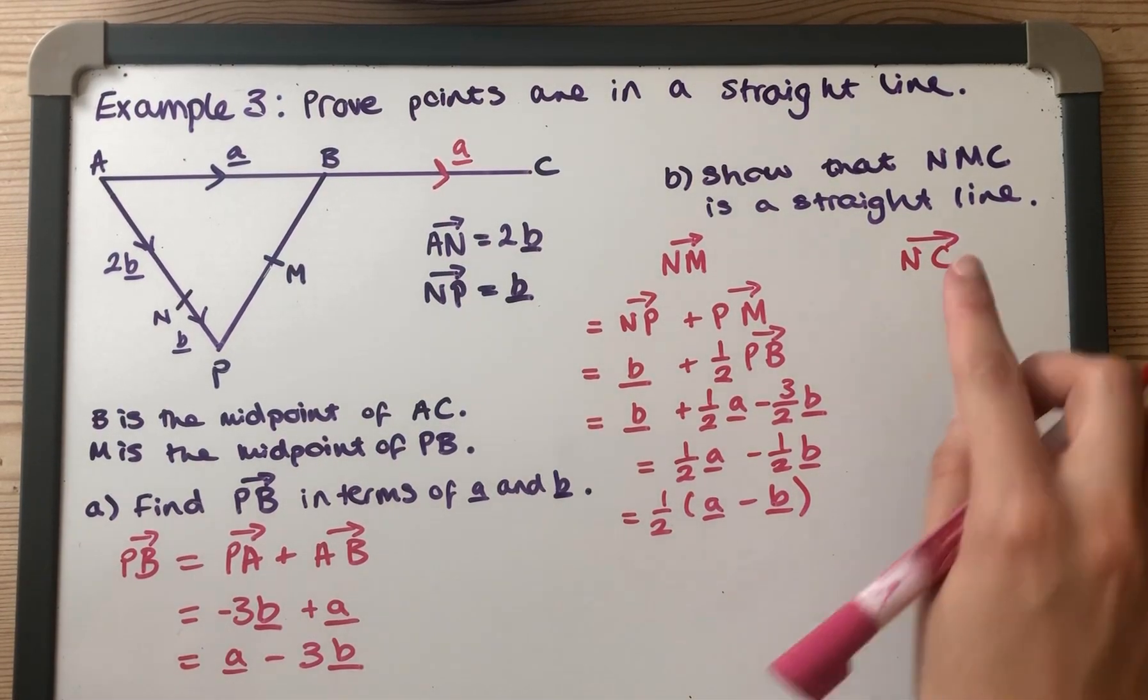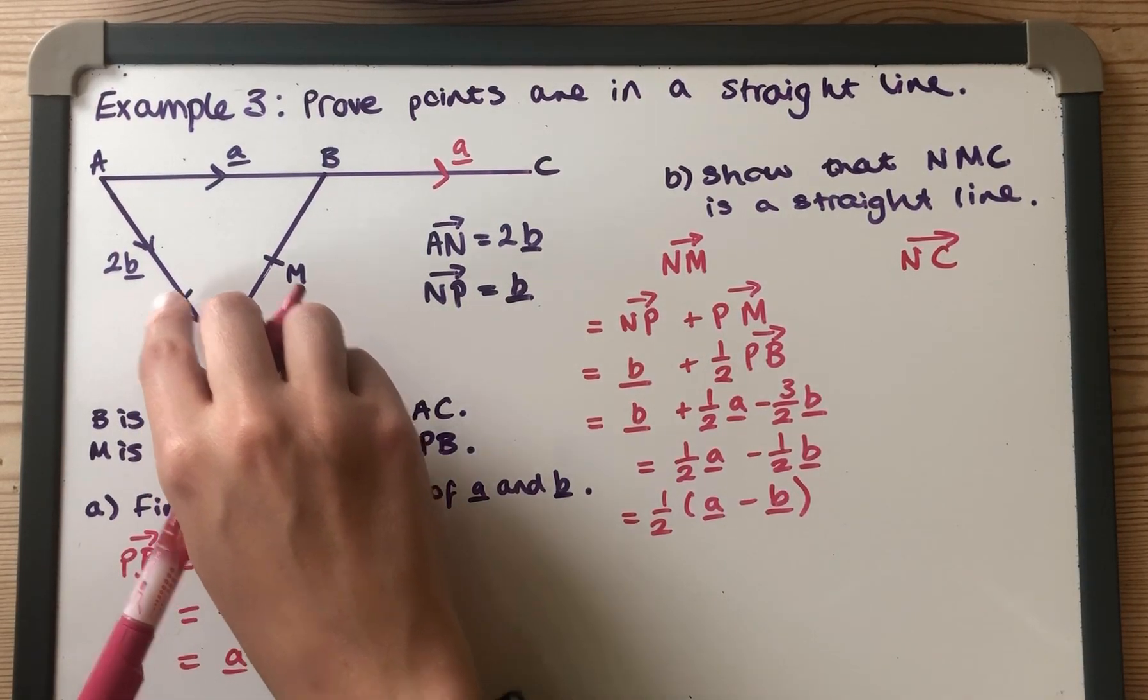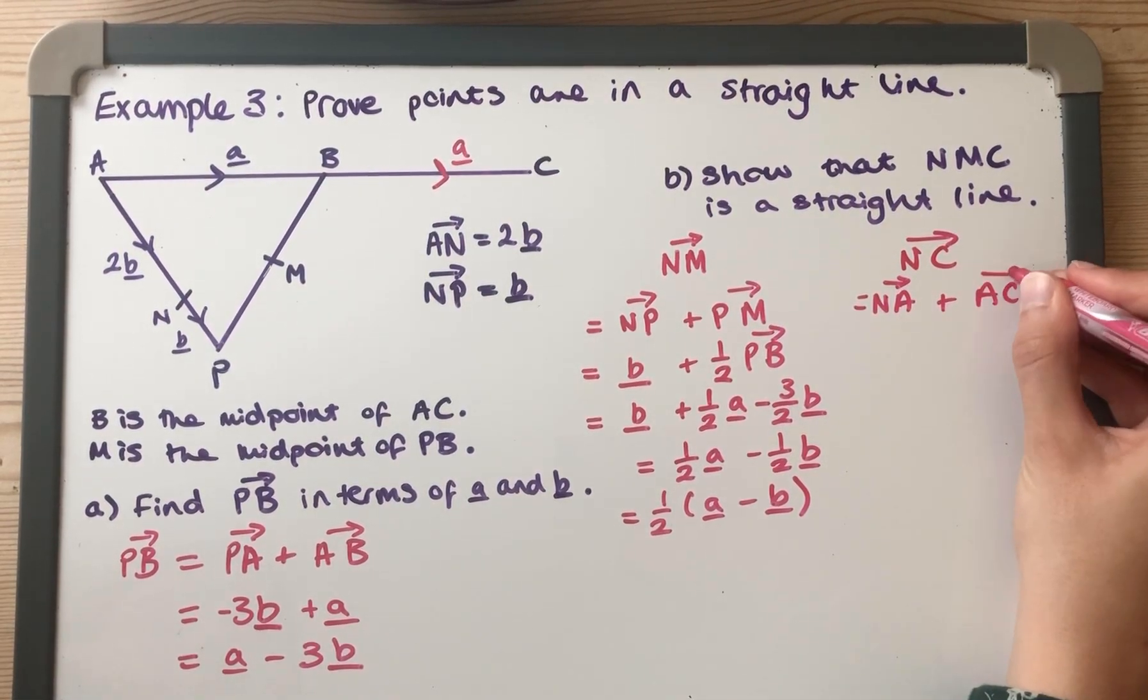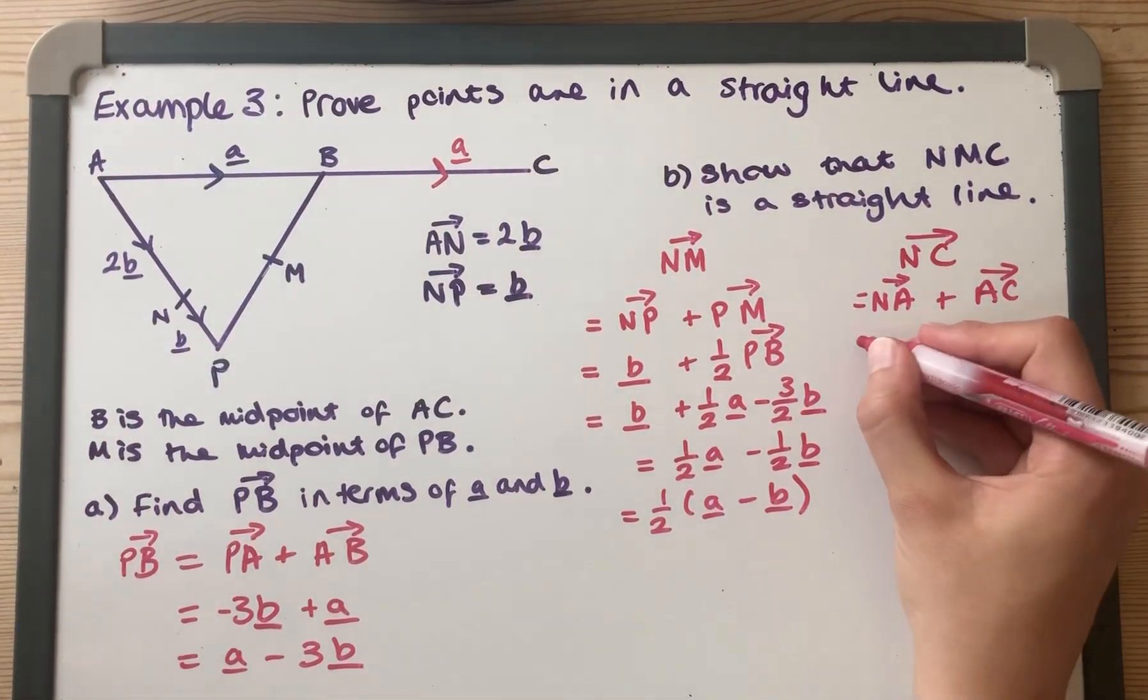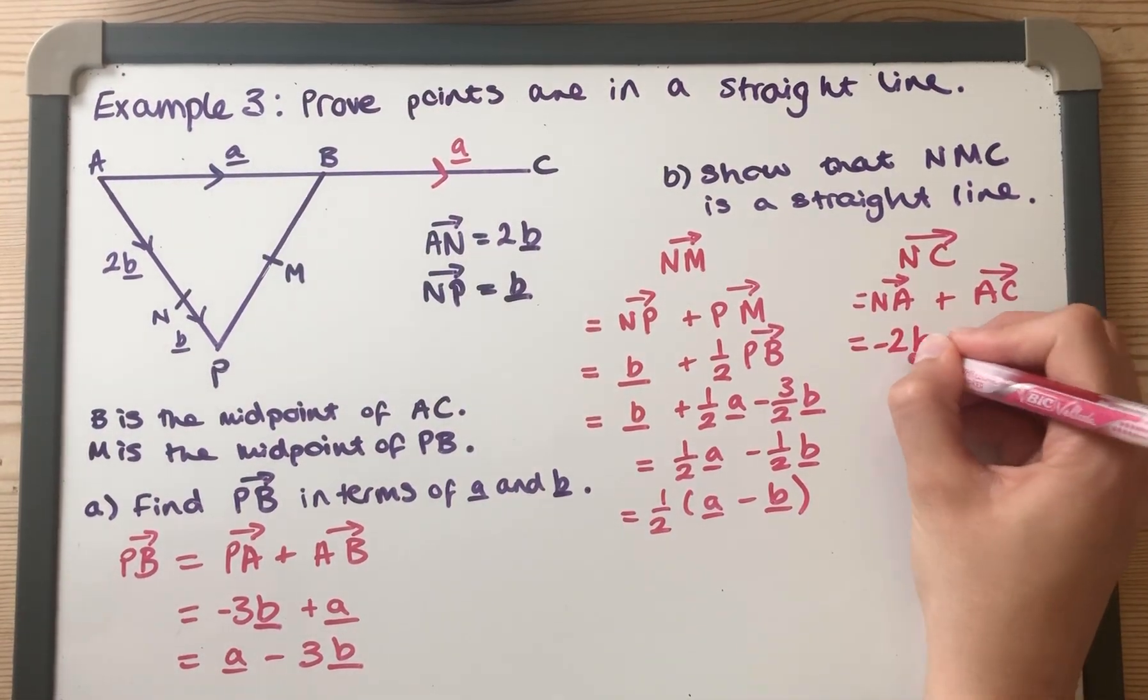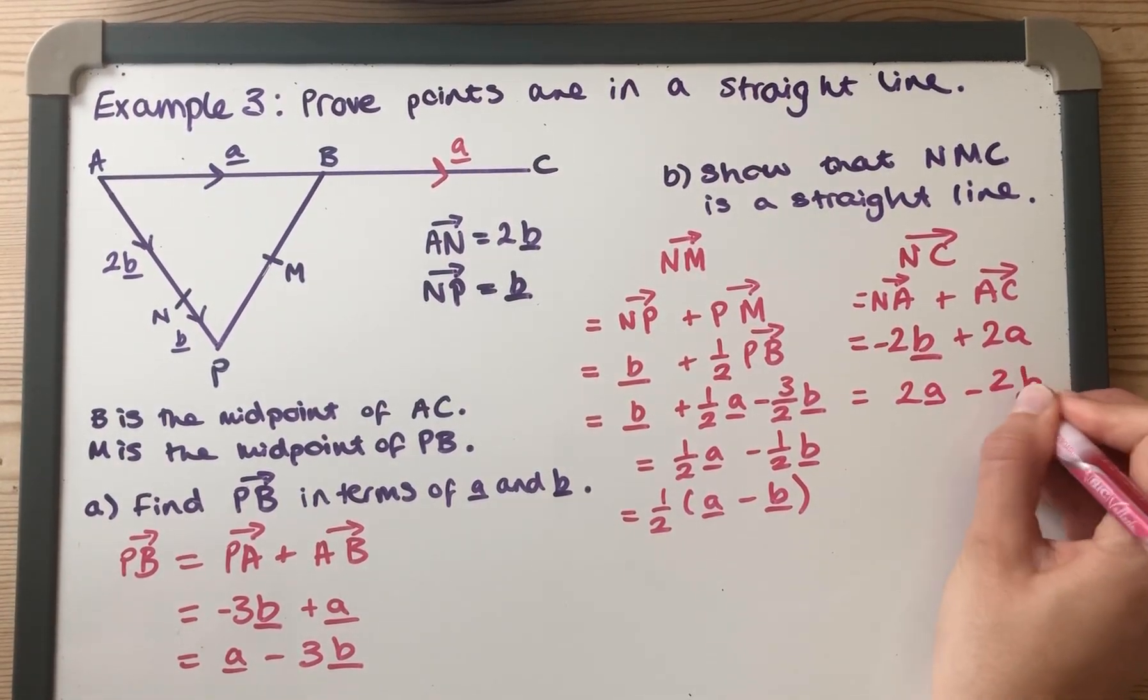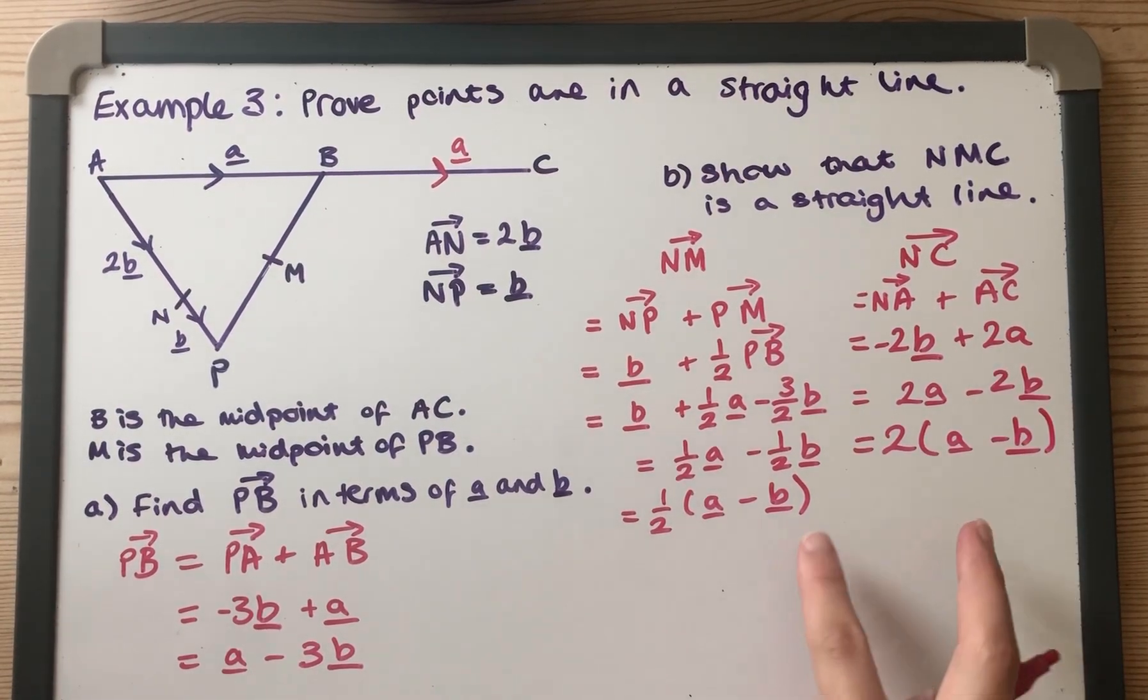Okay now we're going to look at N to C. Now N to C, I match this is okay because I could just go round like that, so it's going to be going N to A and then A to C, and I can do A to C all in one sweep because it's there. So N to A, because it's going the opposite way around to that, it's minus 2B, and then A to C is an A and another A, so plus 2A. So that's actually 2A minus 2B, which if I take out a factor of 2...